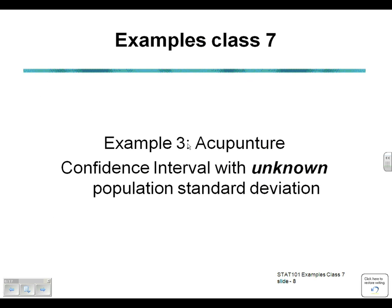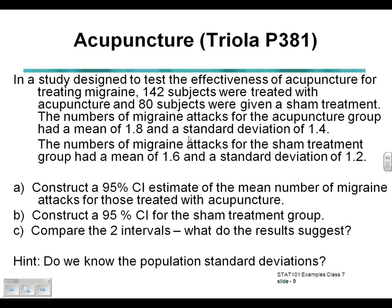Our next example is working through confidence intervals where we have an unknown population standard deviation. This is the more important problem to consider because most of the time we do not know the population standard deviation. Whenever we do not know the population standard deviation and all we have is the sample standard deviation, we need to use the T distribution and not the Z distribution.